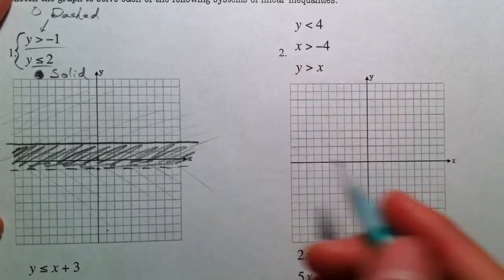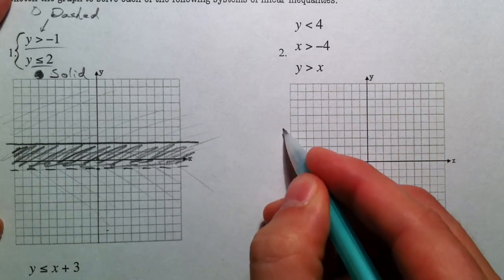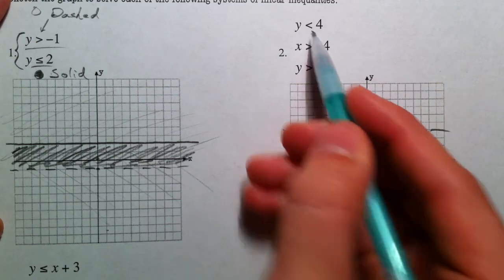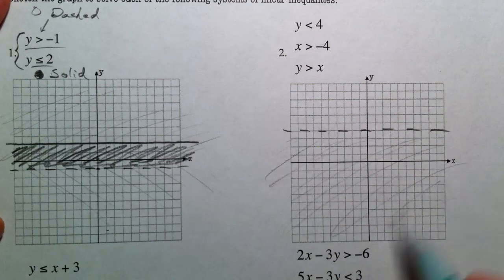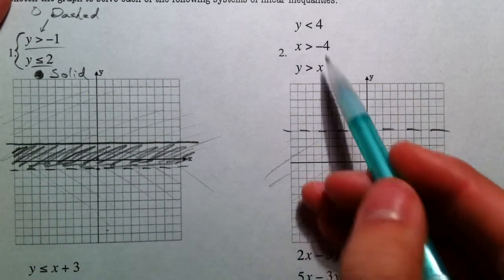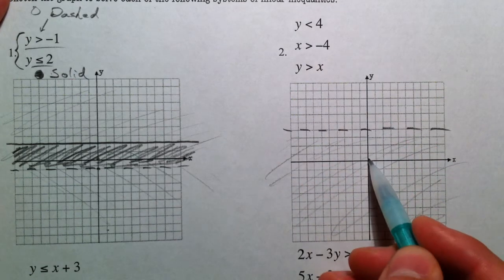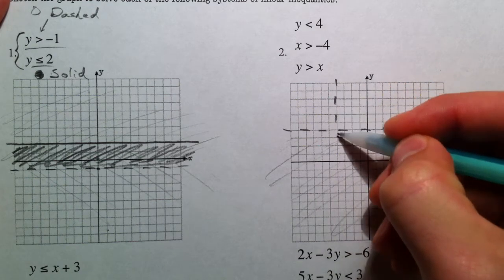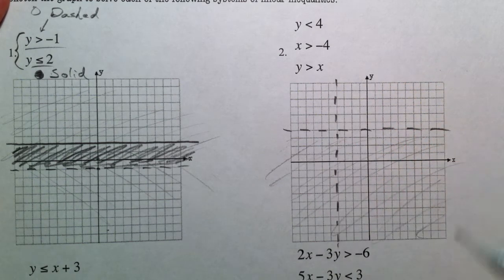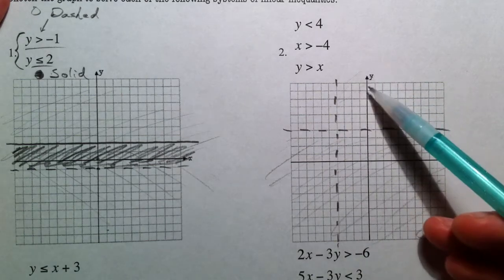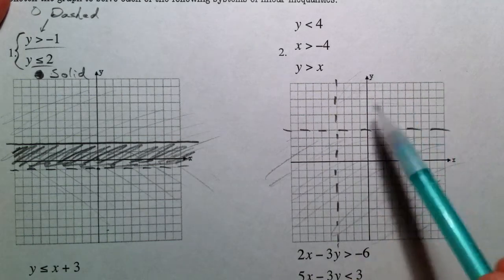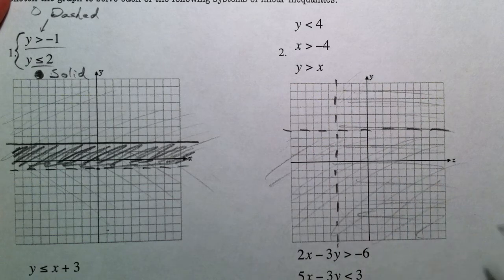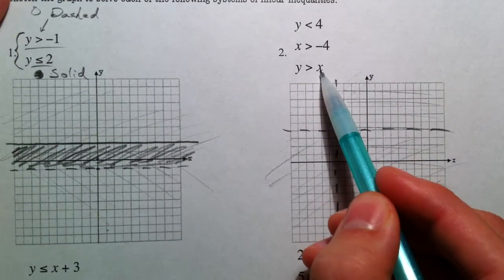Y is less than 4. So another horizontal line. And so Y is less than that. So you can shade like this. All the Ys that are less than that. X is greater than negative 4. Again, all of these are dashed because they're just less than. And all the Xs that are greater than go this way. So you can see that this corner right here is where the overlap is right now.